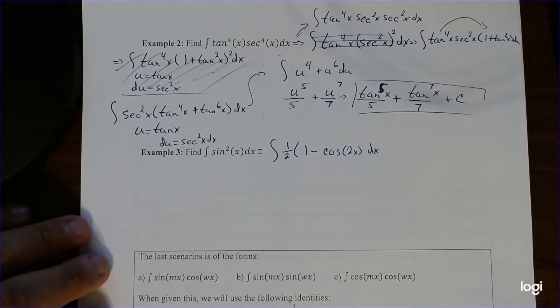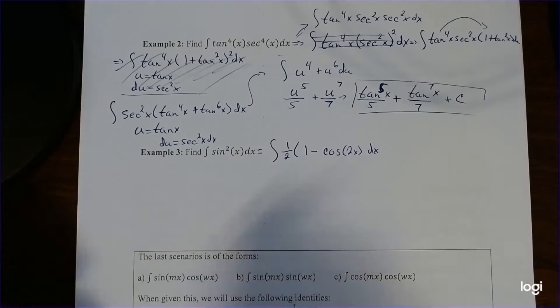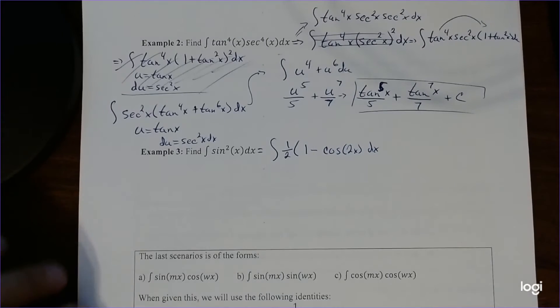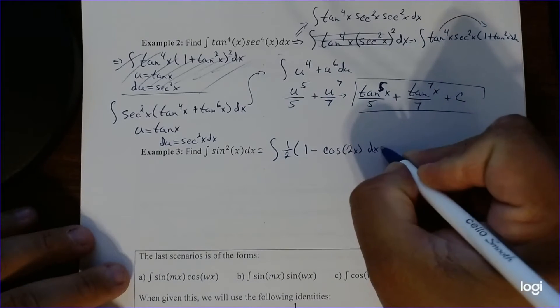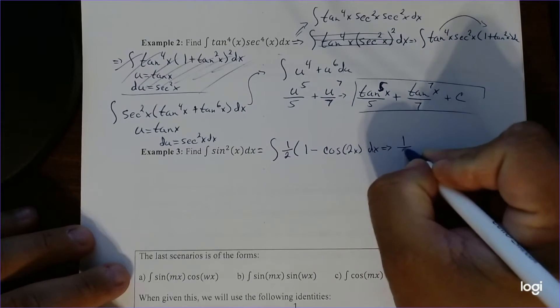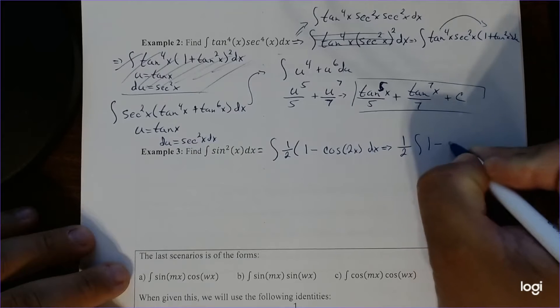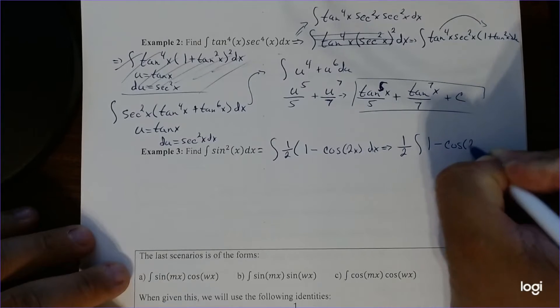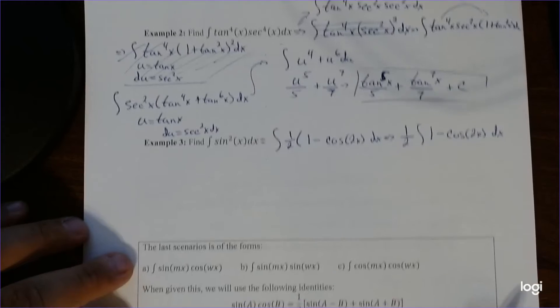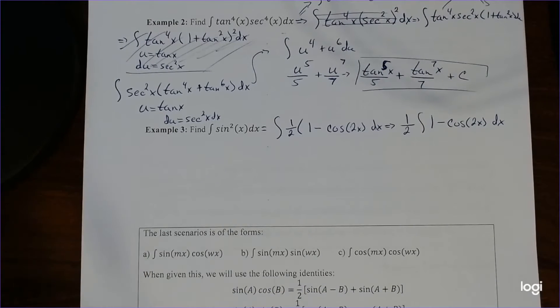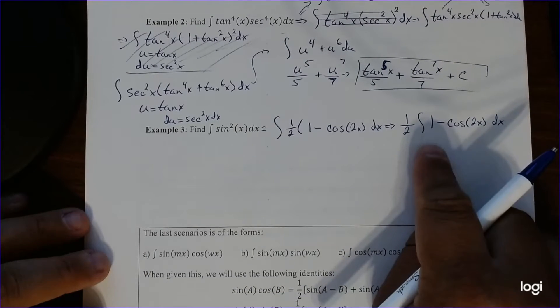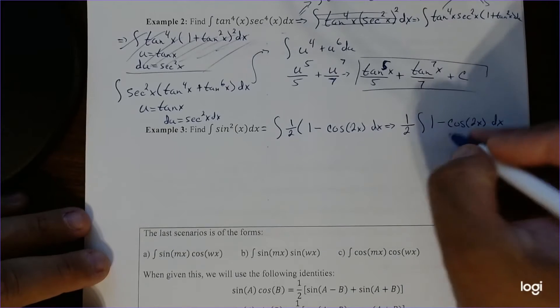So this will end up being the integral of one-half times one minus cosine 2x, which again, is actually much easier to deal with because we've actually seen this before as well. So I just simplified a little bit. I'll just take out the one-half to make it look like this. So the first part's easy. The integral of one is just going to be x. But this is what we're going to deal with.